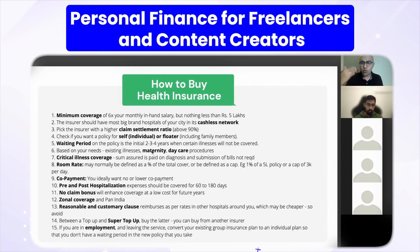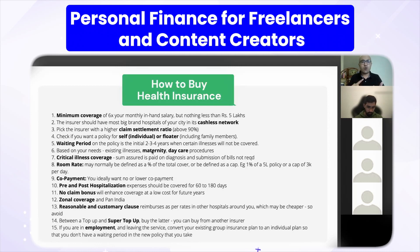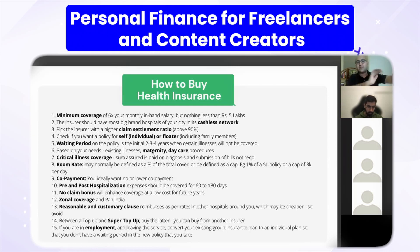Co-payment clauses require you to pay a particular percentage yourself — try to see if you want full coverage instead. Pre and post hospitalization expenses: ideally a pre-period of 60 days and post-period of 180 days, covering lab tests, medicines, and doctor OPD charges. Other important features include no-claim bonus, zonal coverage, and super top-up. The basics have been covered — the rest you can read.